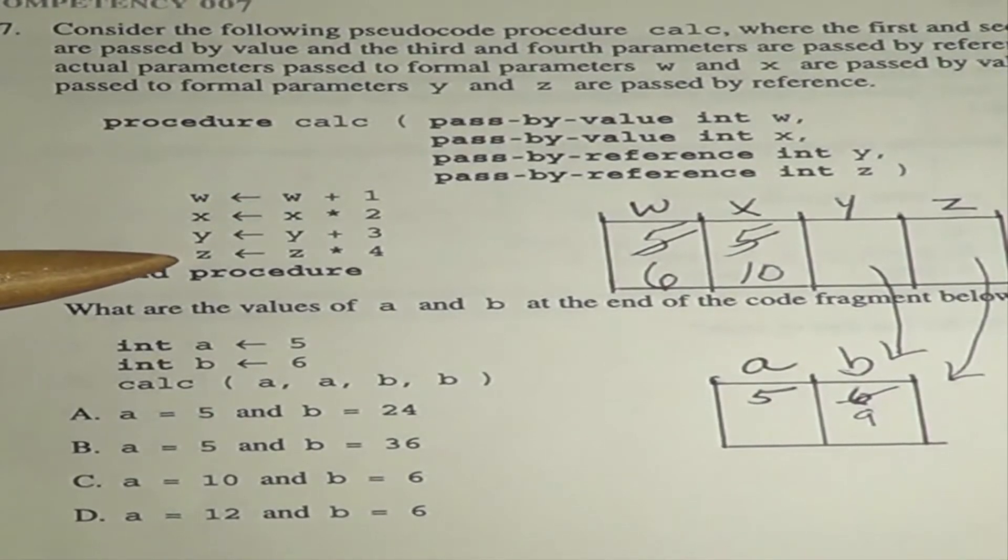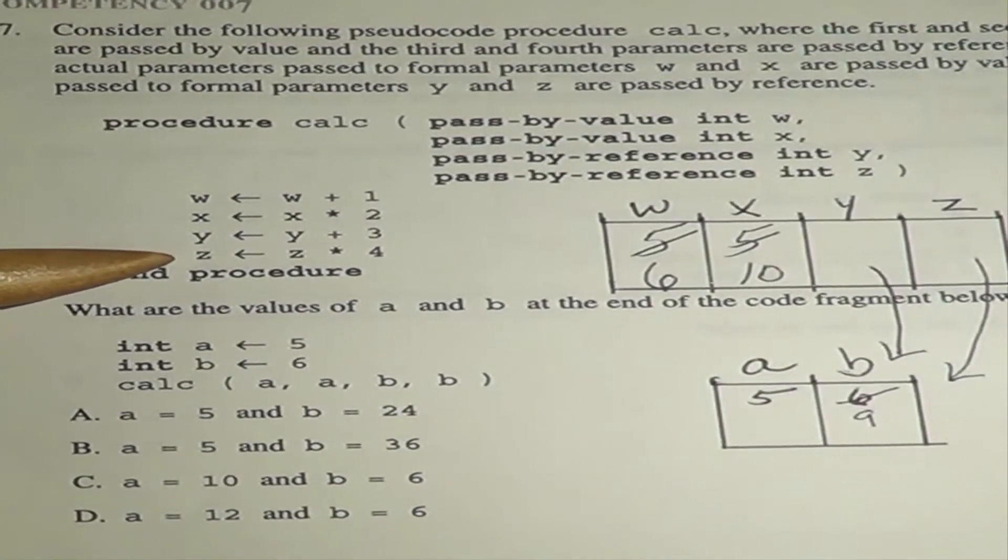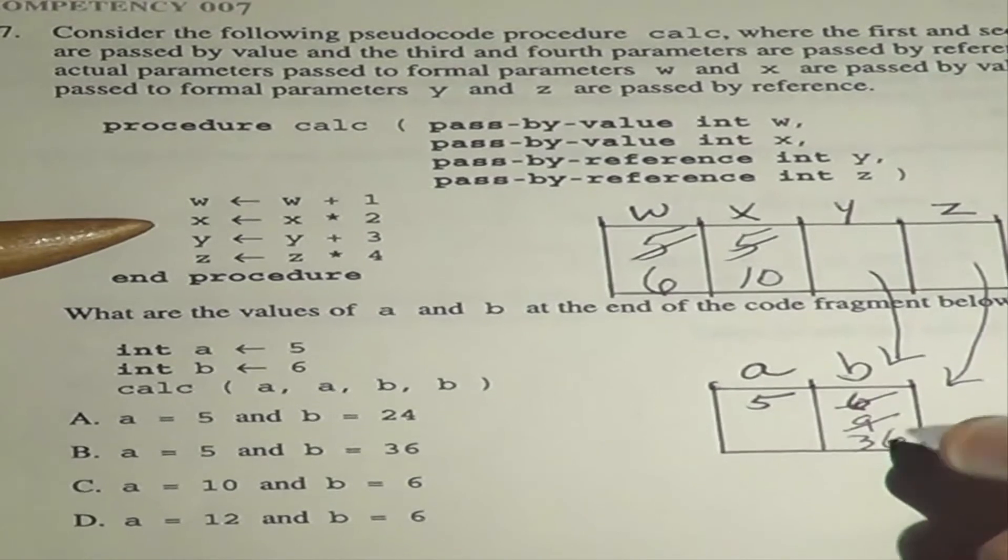Now, when it's Z's turn to do, the value it's pointing to is no longer 6. It is 9. Therefore, when Z multiplies by 4, 9 times 4 is 36.